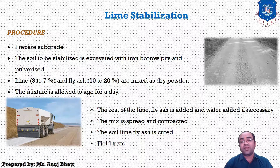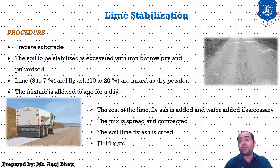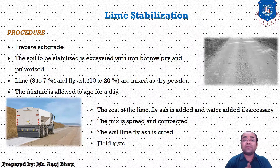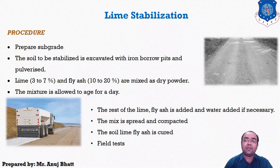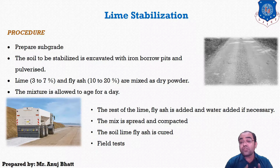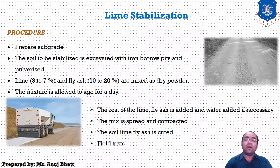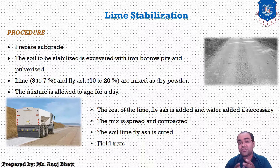Lime produces a decrease in the plasticity index of soil. The improvement in strength is partially due to the decrease in the plastic property of the clay, and also partially due to the pozzolanic reaction of the lime with the soil mass. Lime is also used together with fly ash.